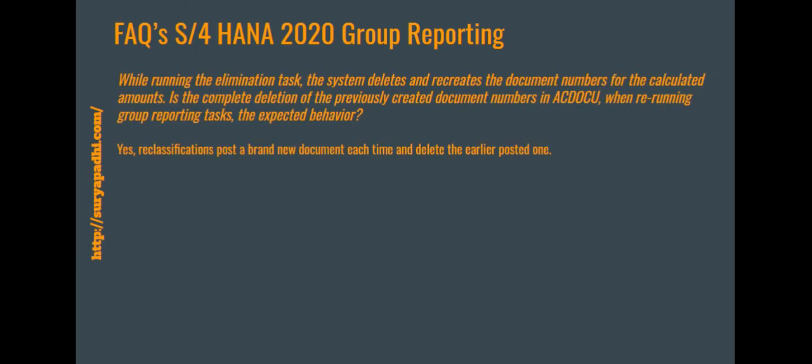While running the elimination task, the system deletes and reassigns document numbers for the calculated amount. Is the complete deletion of previously created document numbers in the ACDOCU table expected when re-running a Group Reporting task? Yes, this is expected behavior. When you run consolidation, the system creates a brand new document each time and deletes the earlier posted one.